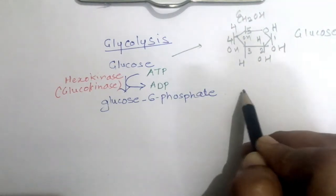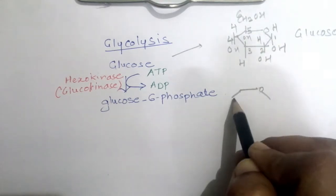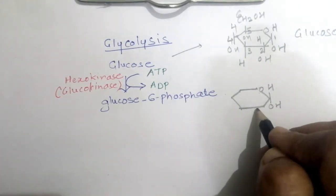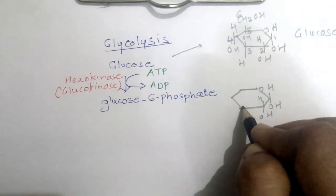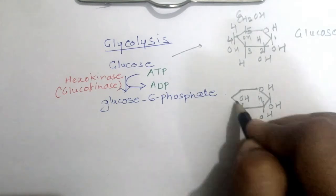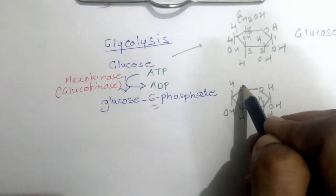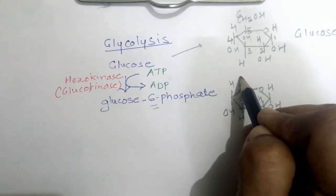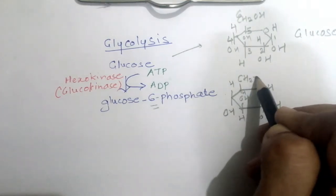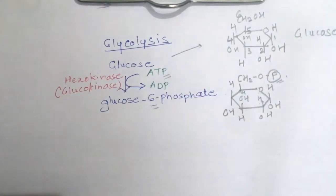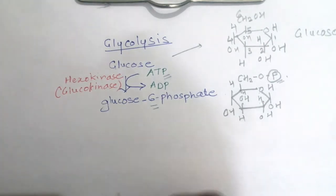In glucose-6-phosphate, the phosphate is attached to the 6th carbon of glucose. The 6th carbon is where there will be addition of a phosphate group. This phosphate group has come from ATP — one phosphate is transferred to the glucose and ATP becomes ADP. So this is an investment of energy; ATP is invested in the breaking down of glucose.